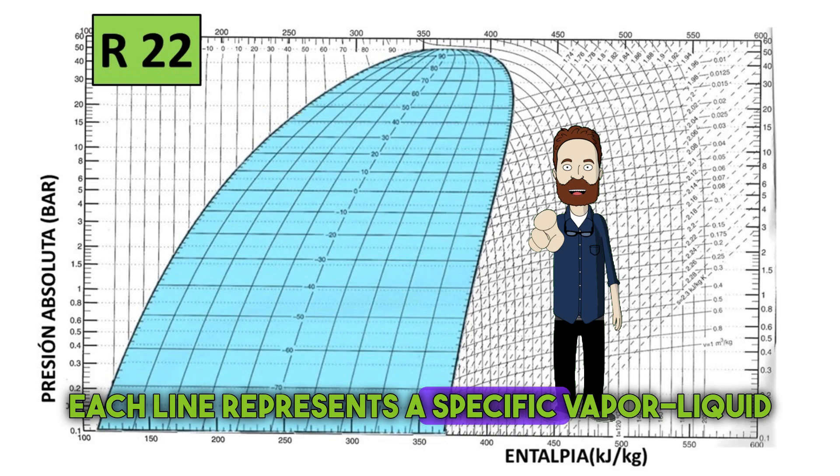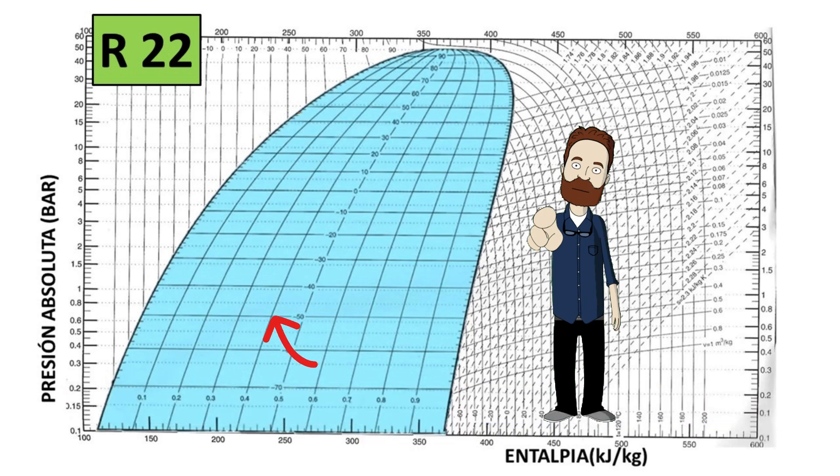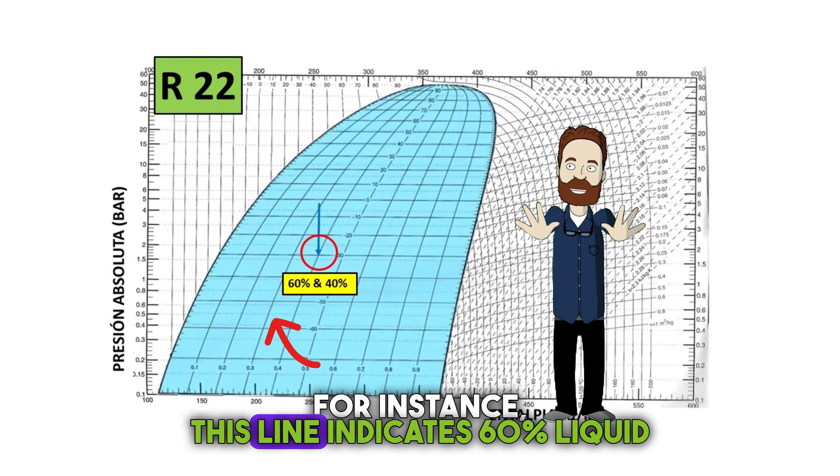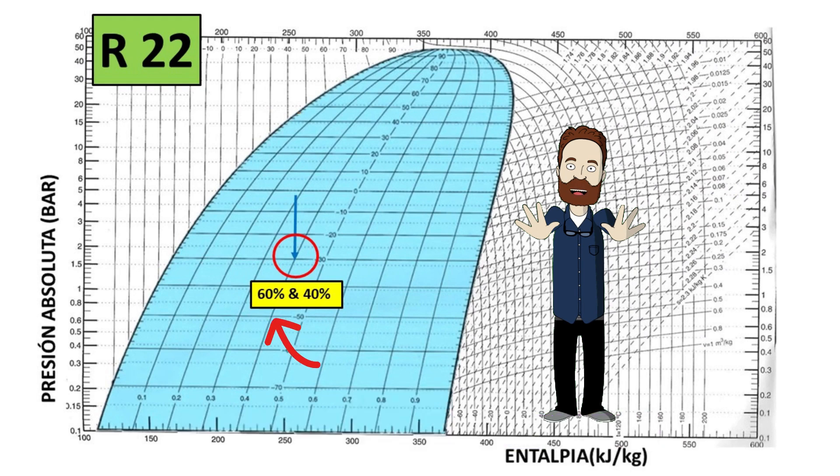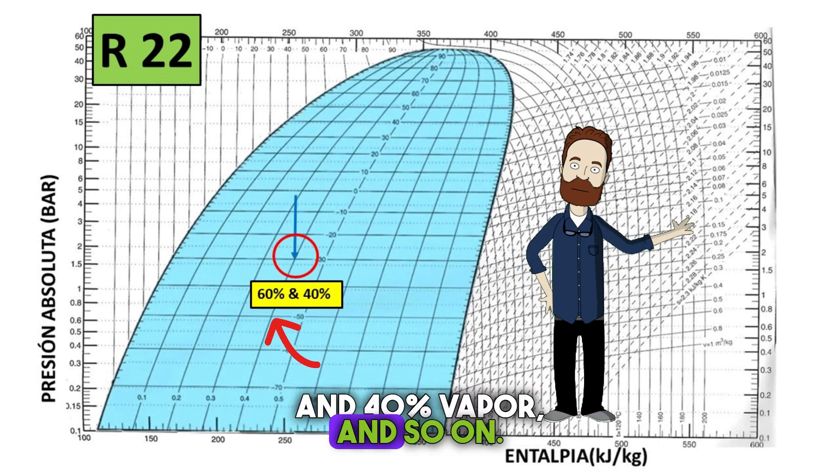Each line represents a specific vapor-liquid ratio. For instance, this line indicates 60% liquid and 40% vapor, and so on.